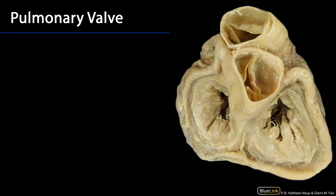Here is a lovely view of the heart valves. Here is our pulmonary trunk and here is our ascending aorta. Then we have our tricuspid and bicuspid valves — so this would be the pulmonary valve and the aortic valve. The pulmonary valve is the anterior-most vessel that we can see.